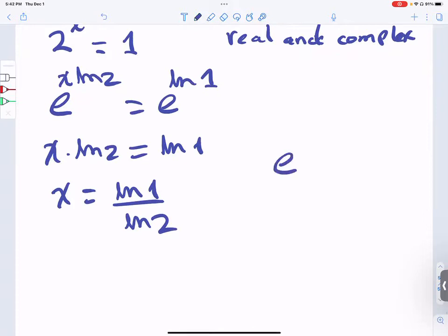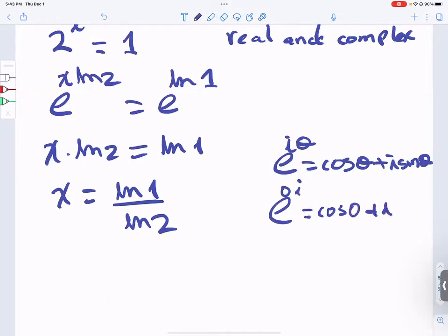e to the i theta is cosine of theta plus i sine of theta. e to the 0i equals cosine of 0 plus i sine of 0. The cosine of 0 is 1, the sine of 0 is 0.